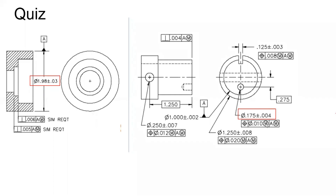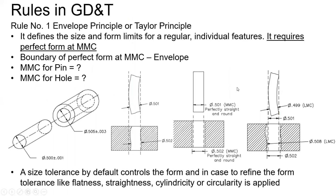The feature control frame consists of a system of boxes with compartments that give information to the manufacturing team on how to manufacture the part. This is the language of GD&T. Next, we will discuss the rules in GD&T. We have certain rules and will focus on the key basic points.